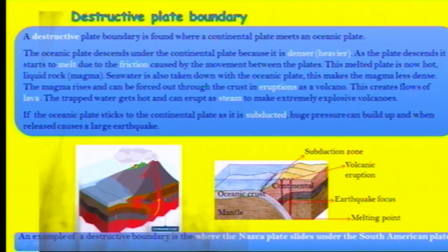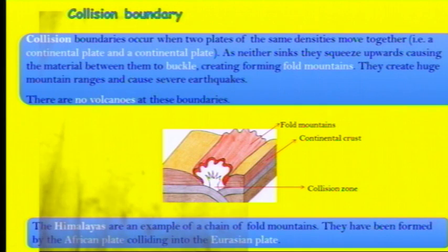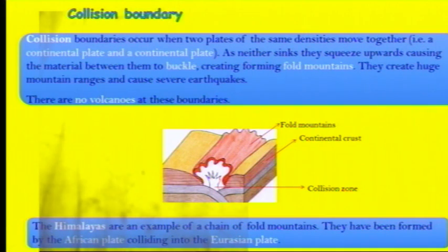The earth's focus is within the crust where the earthquake is actually happening. The collision boundary is when we have two plates coming together in a collision. They don't form volcanoes but they do form fold mountains like the Himalayas. The difference between the collision and the destructive boundary is that in the destructive we've got one oceanic plate and one continental, while in the collision boundary we have two continental plates coming together. Since neither is heavier, they both push upwards to create mountains.